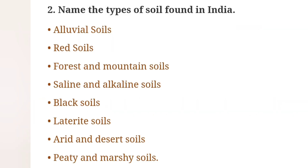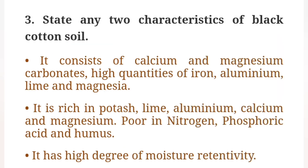Question 3: Name the types of soil found in India. Types include: Laterite soils, Arid and Desert soils, Peaty and Marshy soils. Question 4: State any two characteristics of Black Cotton Soil. It consists of calcium and magnesium carbonates, high quantities of iron, aluminium, lime and magnesium.